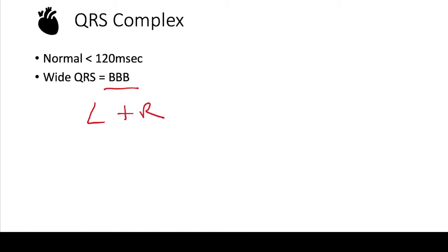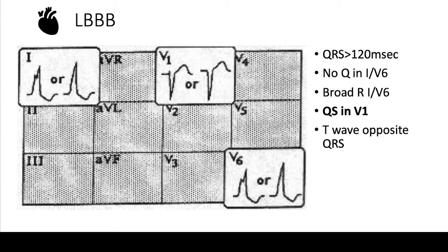First, let's talk about left bundle branch block. There are a ton of criteria for what makes a bundle branch block a left bundle branch block, but I want you to learn just one criteria that will help you determine whether this is a left or right 95% of the time. That's looking specifically at V1. If V1 has a predominantly negative deflection in the QRS complex, it's likely a left bundle branch block.